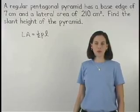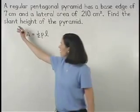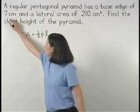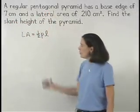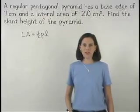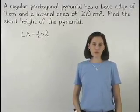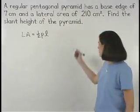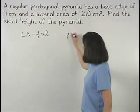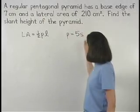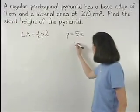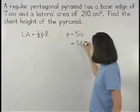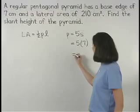However, we do know that the pyramid has a base edge of 7, and since the base is a regular pentagon, we know that it has 5 congruent sides. So, the formula for the perimeter of the base is 5 times the length of a side or 5 times 7, which is 35.